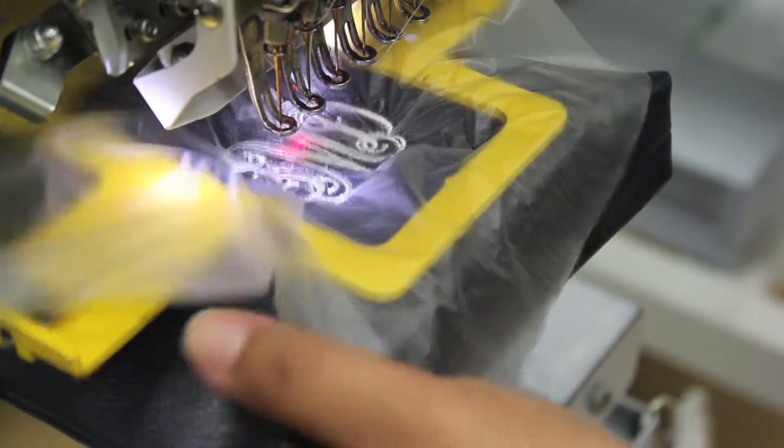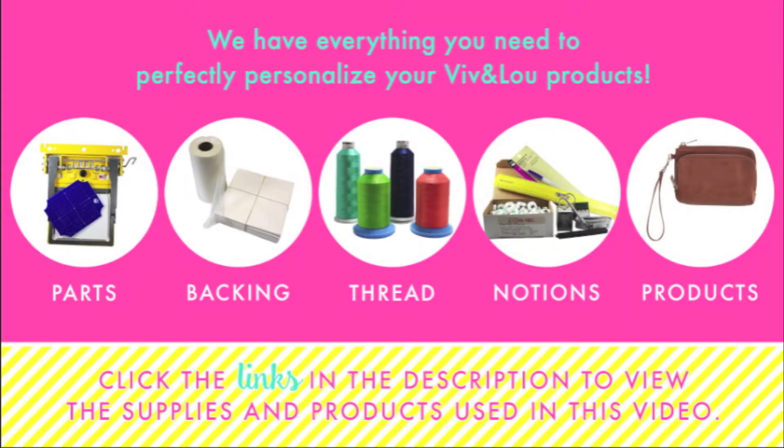When your sew is complete, remove the product from the frame and the Sulky. There you have a finished product. Click the links in the description below to view the items used in this video.